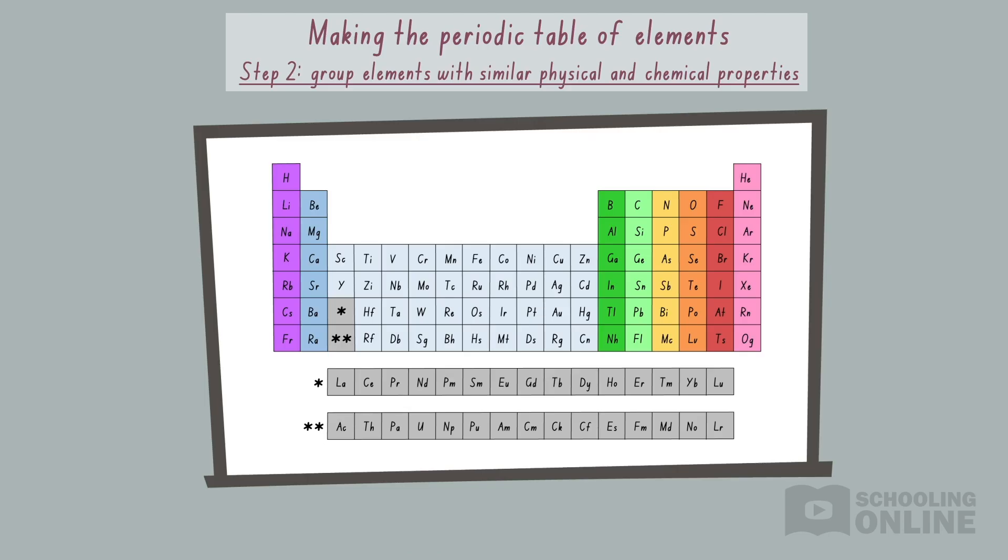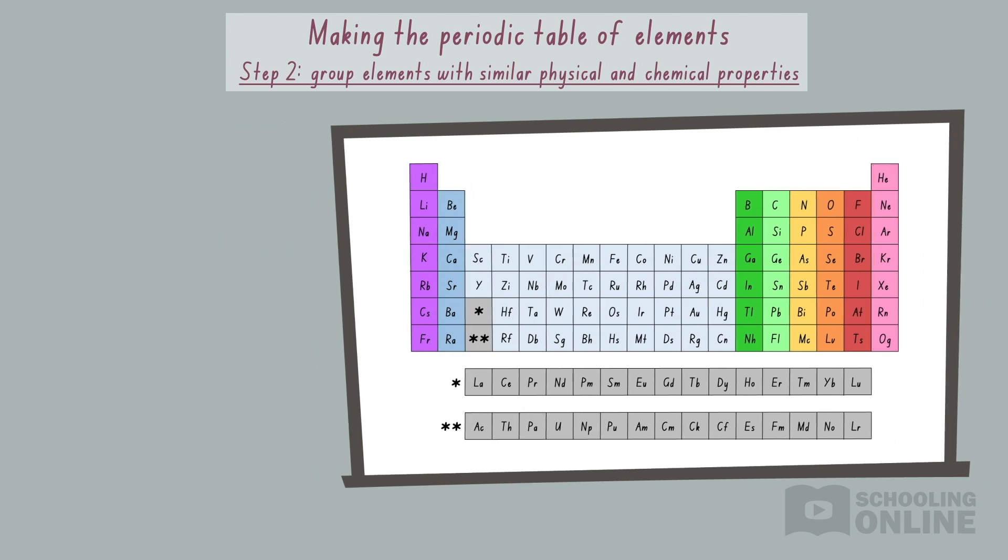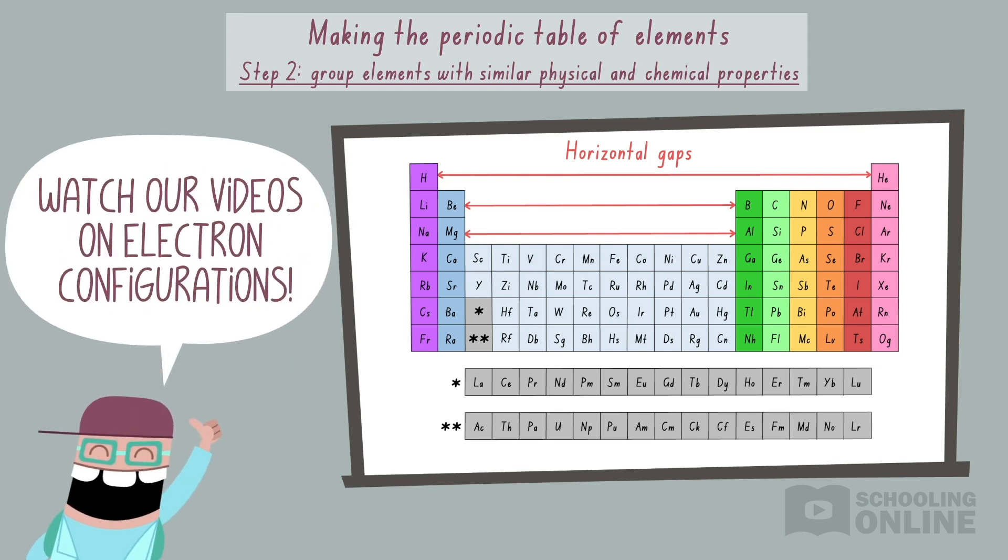As we can see, the elements are sorted into columns in the periodic table. Each column contains elements with similar physical and chemical properties, as represented by the colour coding. For example, royal blue represents the alkaline earth metals, and pink represents the noble gases. To ensure the columns align perfectly, we need to add horizontal gaps between some elements. We'll explain why some rows are wider than others in our videos on electron configurations in topic 2, atomic structure and atomic mass.